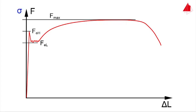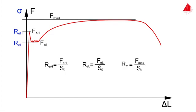The upper yield strength ReH is calculated by dividing the force FeH by the original cross-sectional area S0. The lower yield strength ReL is defined in a similar way. The maximum force divided by the original cross-sectional area is called tensile strength Rm.